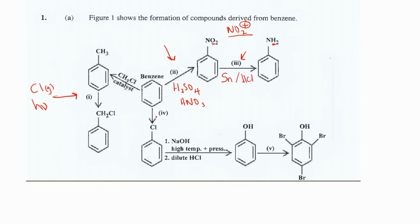In step four we're going from benzene to chlorobenzene. Again we're adding chlorine, so we need elemental chlorine as a reagent. In this case we also need a catalyst, and the catalyst we are using here is ferric chloride (FeCl₃).